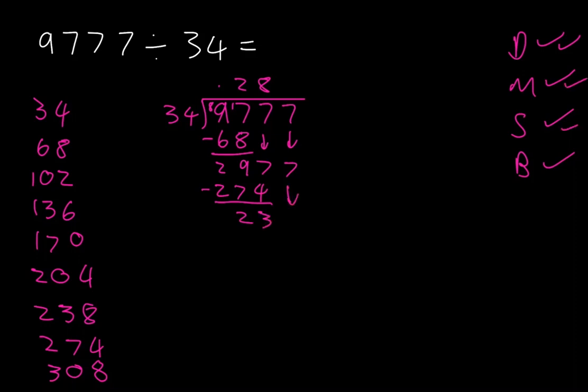We multiplied, we subtracted. Now we're going to bring down the 7, so now we have 237. How many times does 34 go into 237?